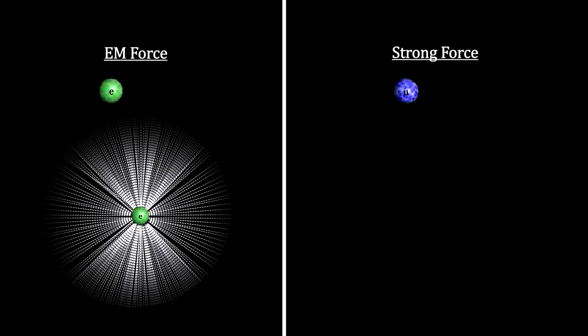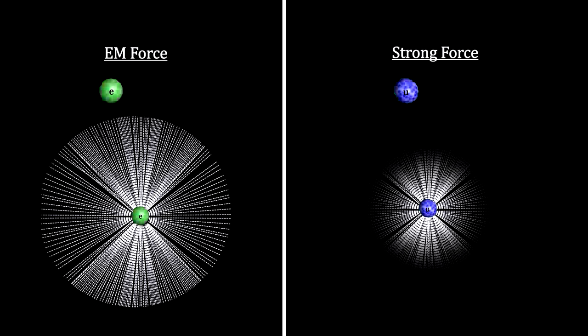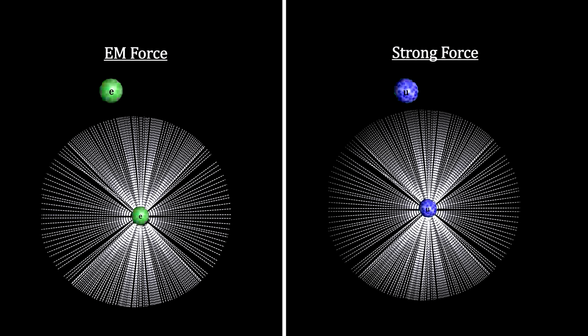Electrons carry the electric charge that generates an electromagnetic force field. Quarks also carry electric charge, so they too generate an electromagnetic force field. Although with only one-third to two-thirds of a charge, their electromagnetic force field is weaker than the electrons.